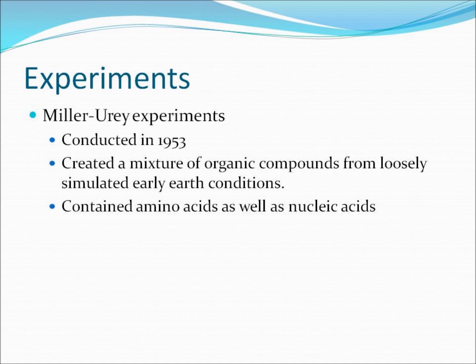Since the formulation of the RNA world hypothesis, a great number of experiments have been conducted in an attempt to determine plausible methods for the propagation of life. The Miller-Urey experiments, conducted in 1953, basically put water, molecular hydrogen, methane, and ammonia in a flask and applied electricity. This produced a host of organic compounds, among which were amino acids and nucleic acids. This was not thought possible before this point, and sparked research into the possible chemical evolution of life.